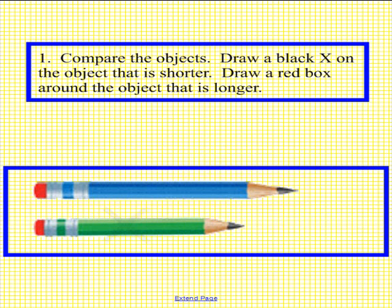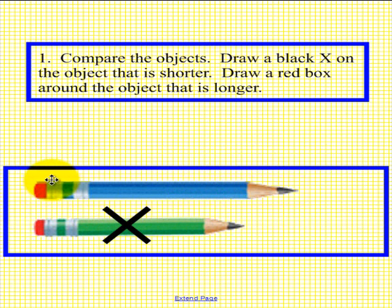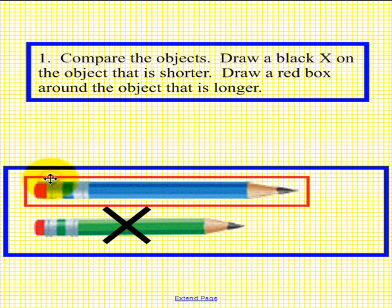Okay, let's see what we have here. The shorter object should have an X on it — that is the green pencil. The object that is longer is the blue pencil, so it should have a red box around it. If your answer matches ours, that is terrific — outstanding.